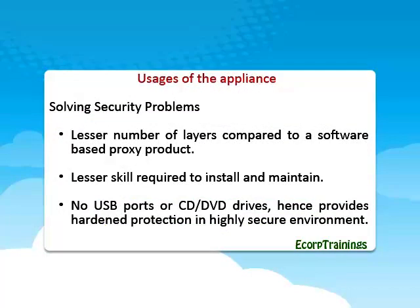Usages of the Data Power Appliance include solving security problems: fewer layers compared to a software-based proxy product, lesser skill required to install and maintain, no USB ports or CD/DVD drives, hence providing hardened protection in a highly secure environment. The appliances are hardened out of the box — when the appliance is shipped, every feature is disabled. It has encrypted file systems, is tamper-proof, has specialized secure handling of crypto keys and certificates, and has an embedded OS, making it not prone to attacks of normal operating systems.